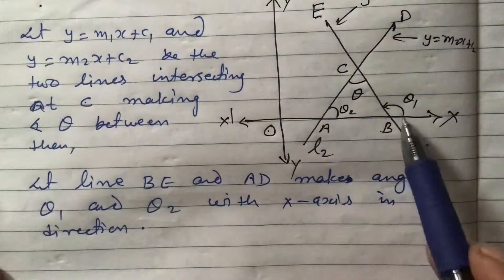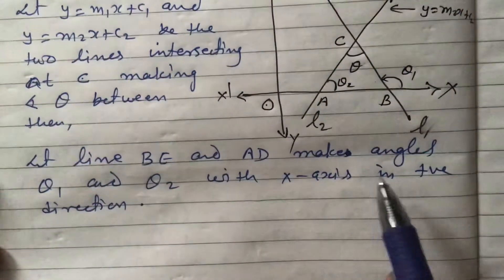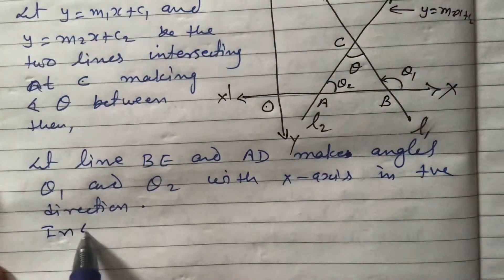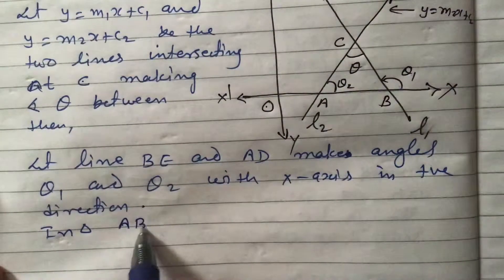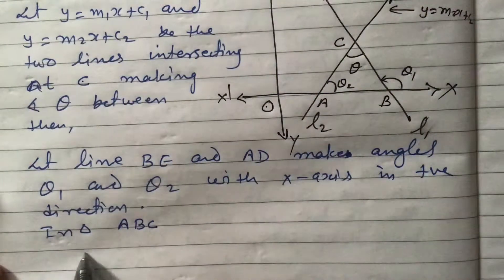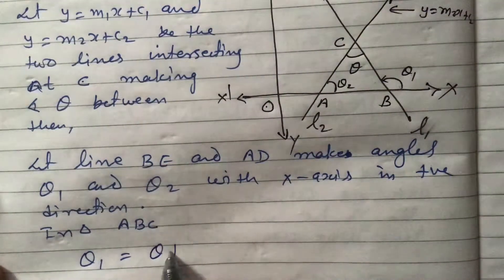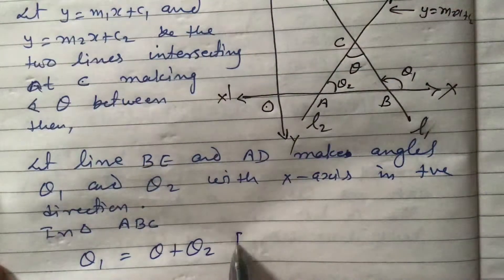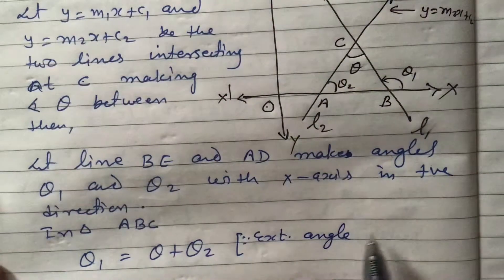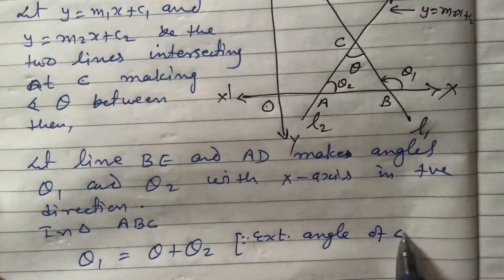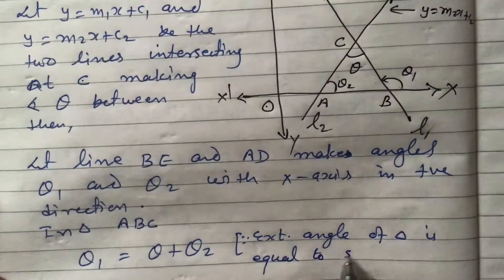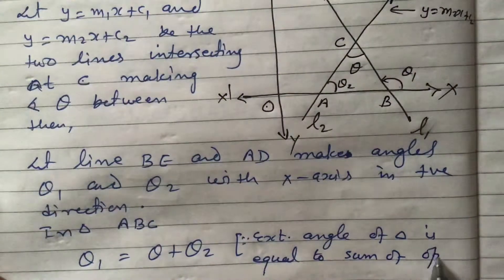So theta 1 will be equal to theta plus theta 2. In triangle ABC, we will use this concept to derive the formula. In triangle ABC, theta 1 is equal to theta plus theta 2, by the reason: the exterior angle of a triangle is equal to the sum of the opposite interior angles.